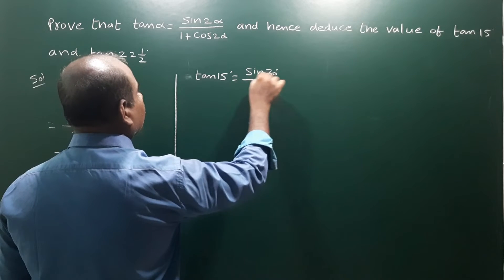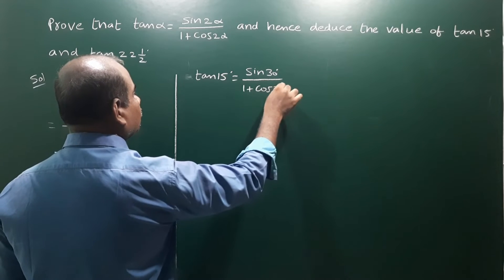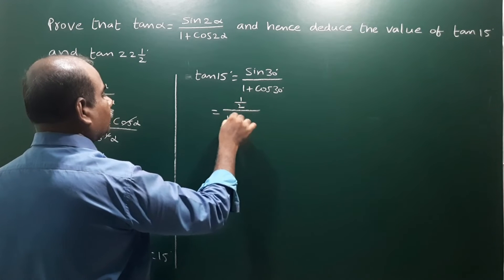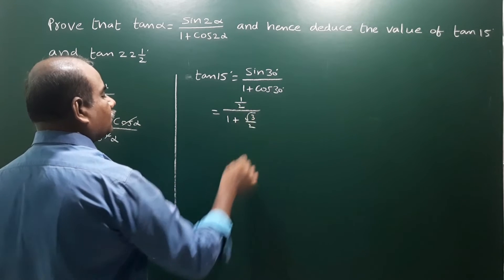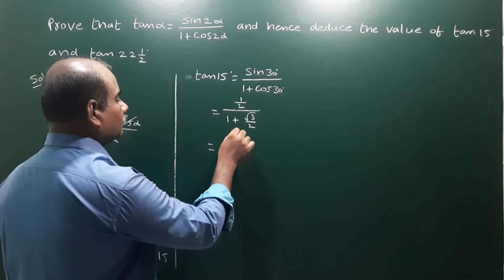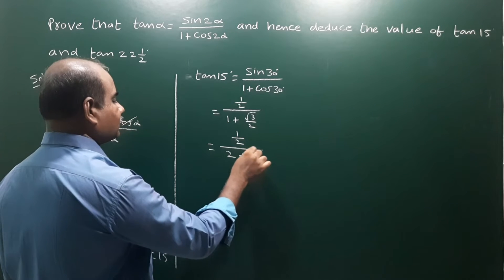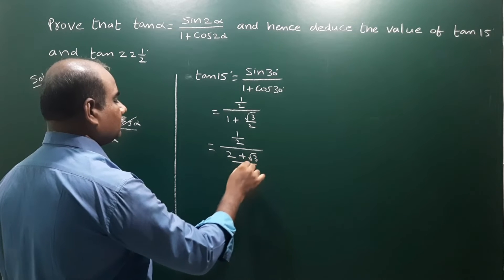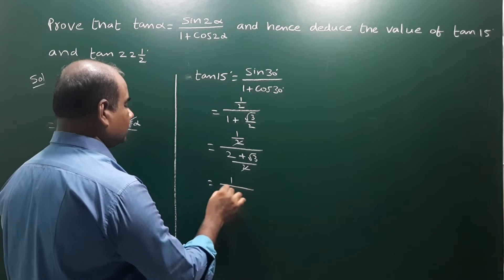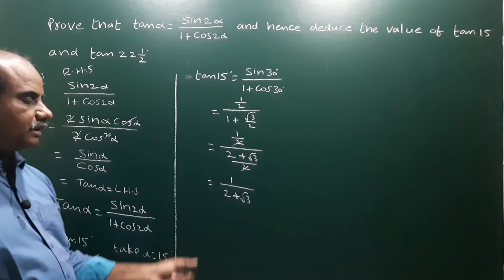So the numerator is sin 30° = 1/2, and the denominator is 1 + cos 30° = 1 + √3/2. Taking LCM in the denominator gives (2 + √3)/2. So the expression becomes (1/2) / ((2 + √3)/2) = 1/(2 + √3).